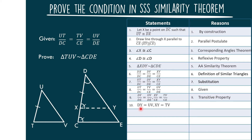Statement number 10: DY is equal to UD, and XY is equal to TV, by the multiplication property of equality — multiplying both sides by DE to make the denominator equal to 1.